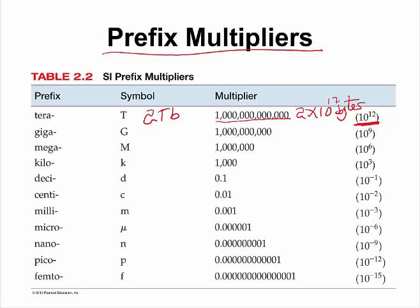What that means is that you have 2 multiplied by 10 to the power of 12 bytes of storage on that hard drive. Giga means 10 to the power of 9, or 1 with 9 zeros behind it. So if you buy a new cell phone and they tell you the storage is 32 gigabytes, that means it is 32 times 10 to the power of 9 bytes of storage.